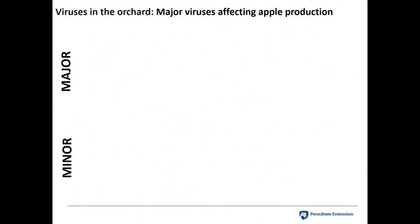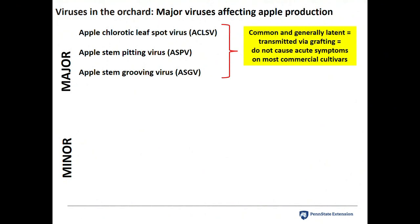The major viruses associated with apple include apple chlorotic leaf spot virus, apple stem pitting, and apple stem grooving viruses. These are unfortunately very common and latent — they don't show any symptoms. They're only transmitted through propagation, through grafting. Insects don't transmit them, you can't touch and move them — it's strictly through grafting. So obviously in the nursery they're starting out with infected budwood, unfortunately.